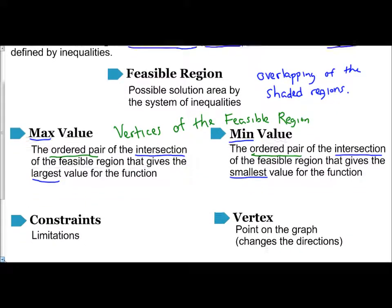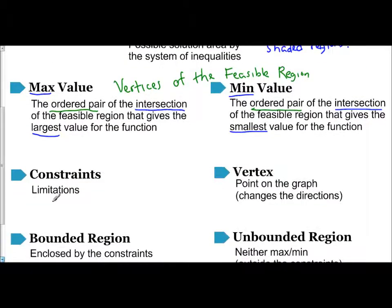Constraints are your limitations. It's the idea of y being less than, less than or equal to, greater than, greater than or equal to, the constraints for each inequality. The vertex is the point of the graph. It changes directions. Those vertices are going to create your maximum or minimum value for it.